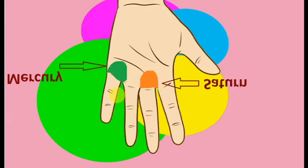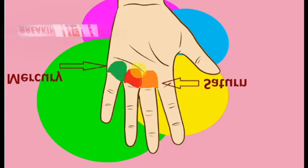The mount of Apollo is located at the base of ring finger and is associated with all the positive attributes of Roman God. If the mount of sun is well developed on any person's palm, then that person will be of genius nature and a famous personality.